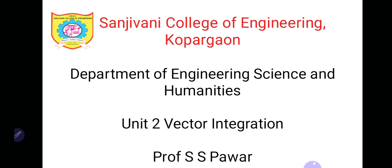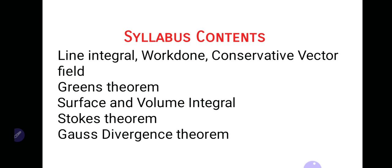In this unit, the syllabus contents are: first, line integral — integration along a curve C in single integration, where curve C may be a closed curve or an open curve. Then, with the help of line integral we find work done, and using work done we decide whether a vector field is a conservative vector field or not.